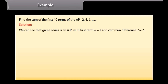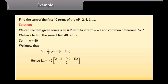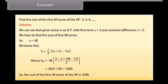We can see that the given series is an AP with first term A equal to 2 and common difference D equal to 2. We have to find the sum of the first 40 terms, so N is equal to 40. We know that S equals N upon 2 into (2A plus (N minus 1) into D). Hence, S40 equals 40 divided by 2 into (2 into 2 plus (40 minus 1) into 2), which equals 1640. So the sum of the first 40 terms of the AP is 1640.